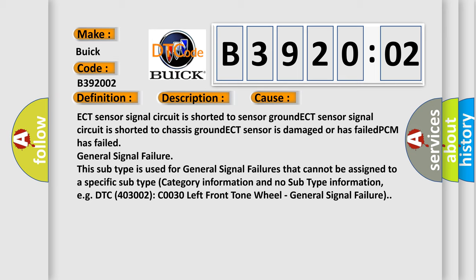This subtype is used for general signal failures that cannot be assigned to a specific subtype category information and no subtype information. For example, DTC 4003002 C0030 left front tone wheel, general signal failure.